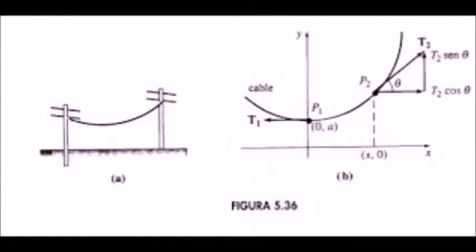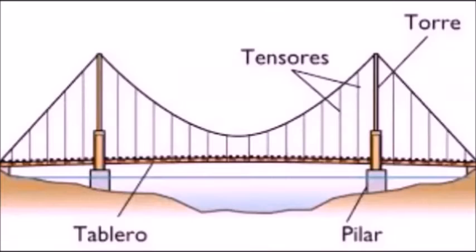Nuestro objetivo es concluir un modelo matemático que describa la forma que tenga el cable. Comenzaremos por examinar una parte del cable entre su punto más bajo y cualquier punto arbitrario. Este elemento es el cable de una curva de un sistema de coordenada rectangular, eligiendo desde el eje Y para que pase a través del punto más bajo de la curva.